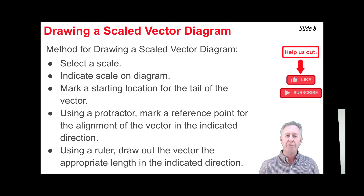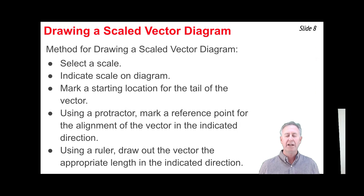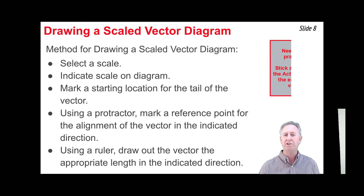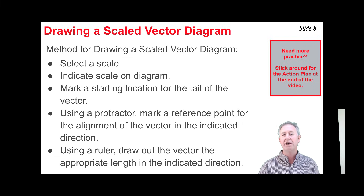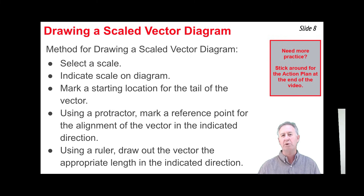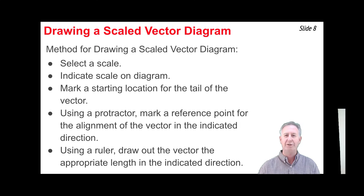Fourth, mark a reference point for the direction of the vector. Take your protractor, set its origin at the starting point, measure around the perimeter to the indicated direction, and mark a reference point there. Fifth and final step, take a centimeter ruler, align the zero point at your starting point through the reference point, and draw the vector to the appropriate length in the indicated direction.